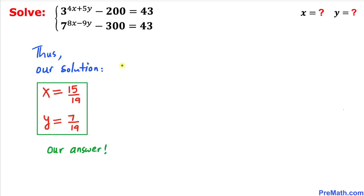Thus our solution to this system is x equals 15 divided by 19 and y equals 7 divided by 19. Thanks for watching, and please don't forget to subscribe to my channel for more exciting videos.